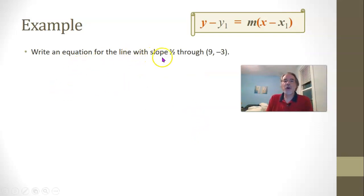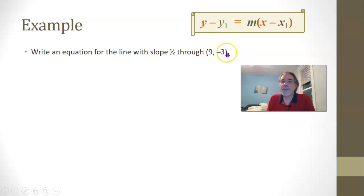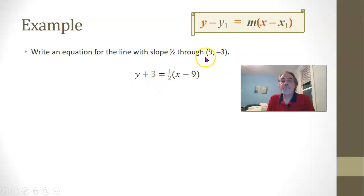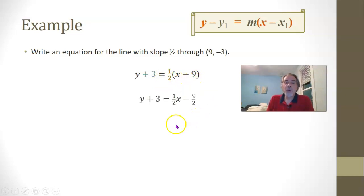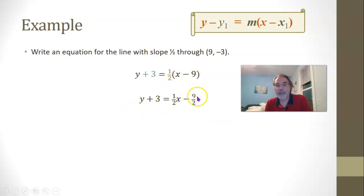Write an equation for the line with slope 1 half through the point 9, negative 3. In place of y1, we put negative 3; in place of m, we put 1 half; and in place of x1, we put 9. So y minus negative 3, which is y plus 3, equals 1 half times x minus 9. Without the parentheses, y plus 3 equals 1 half x minus 9 halves, because 1 half times 9 is 9 halves.